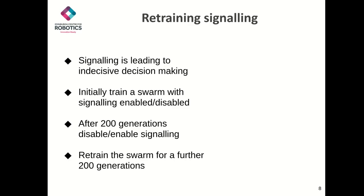To test this further, we trained a swarm initially with the ability to signal turned on for 200 generations. We then turned this off, and trained for a further 200 generations. We then repeated this process, but vice versa. The signaling was initially switched off, and then we turned it back on after 200 generations.